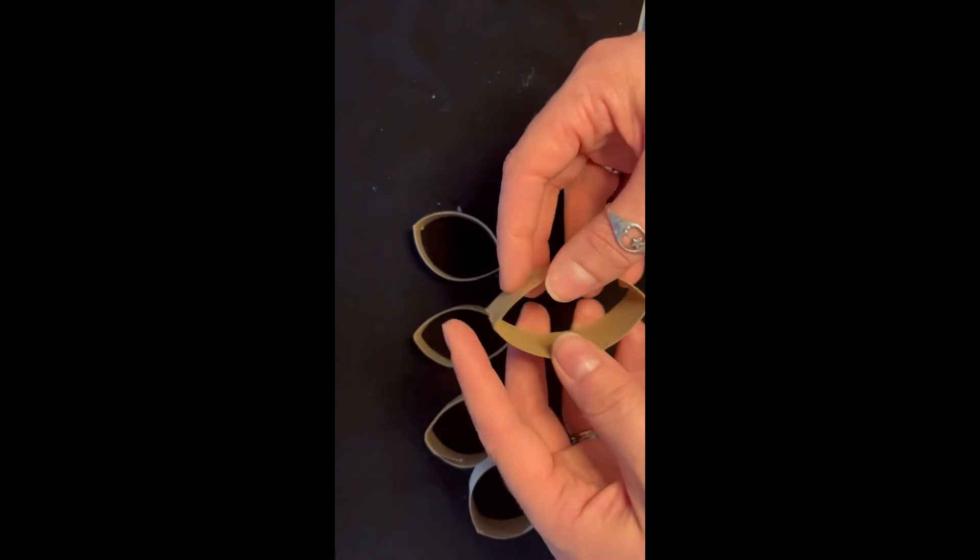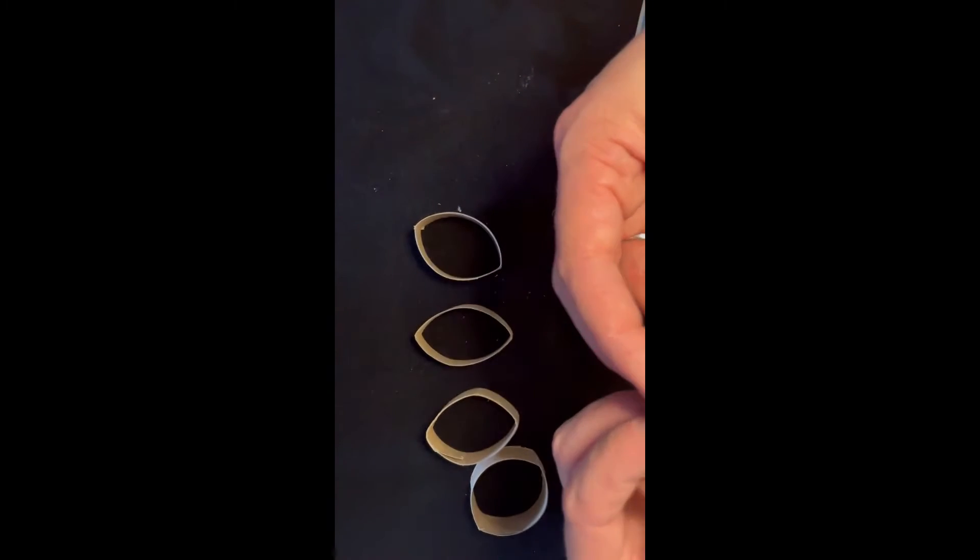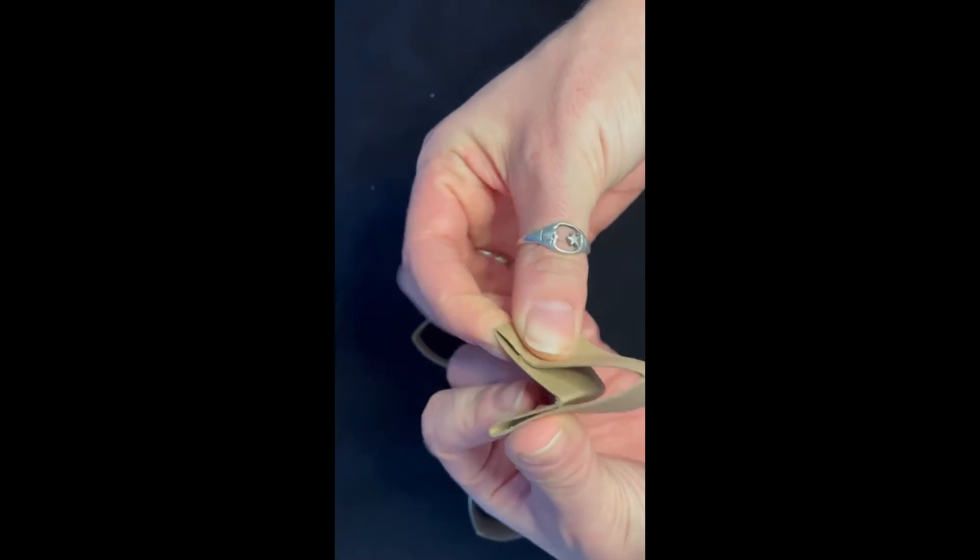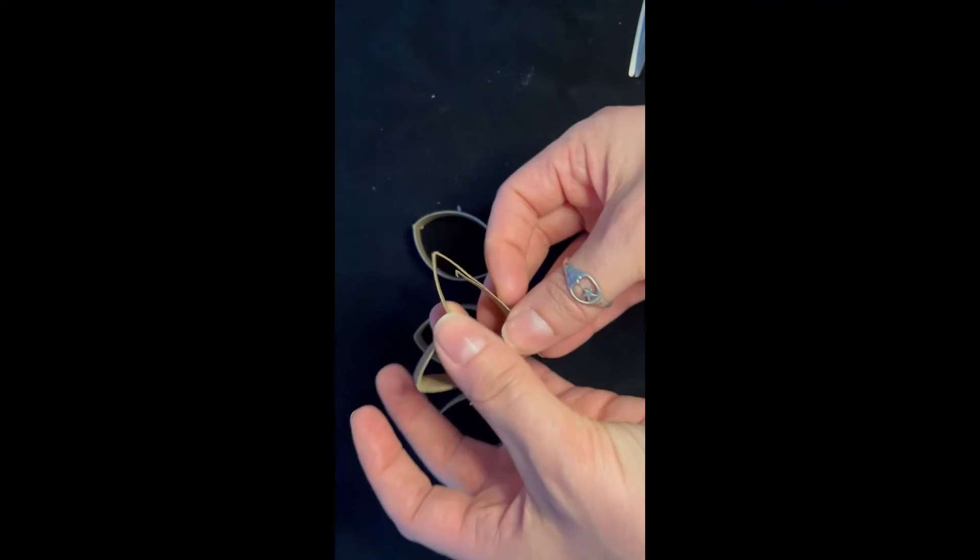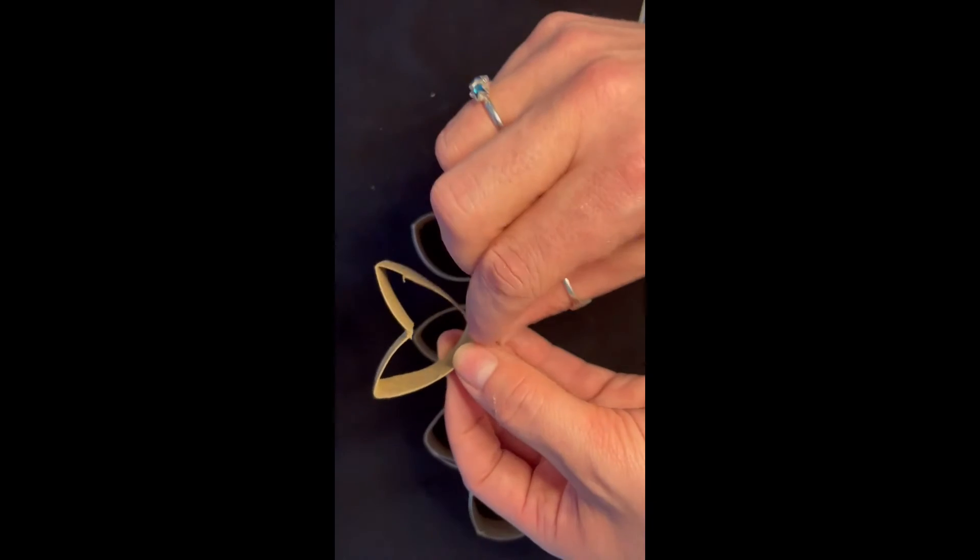And so this is where little kids are going to need help because you actually have to fold it into itself to create that heart like shape. And then you can fold it in half again to make that shape right there. So that's a heart.